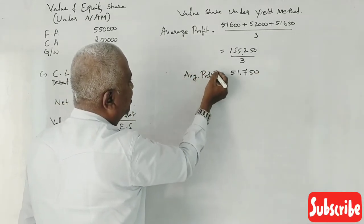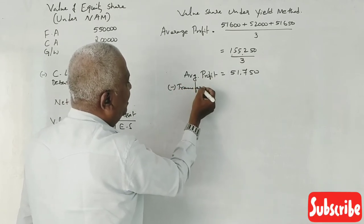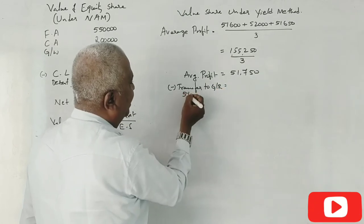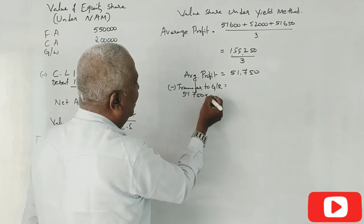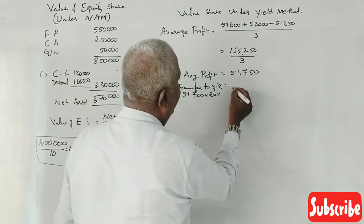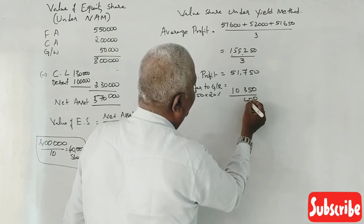Each year, 20% is transferred to reserve. So 51,750 multiplied by 20% equals 10,350 transferred to general reserve.